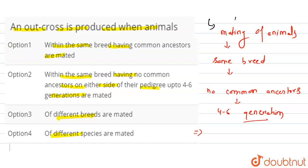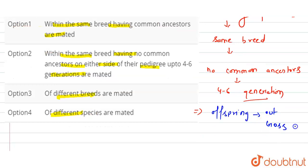The offspring of such a mating is known as an outcross. This is the best breeding method for animals that are below average in productivity and milk production, which will increase milk production quality and growth rate. A single outcross will also help in overcoming inbreeding depression.